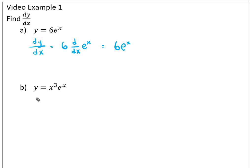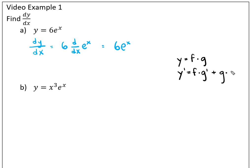For the second function, we acknowledge the fact that this is written as a product. Let's recall the product rule: if I have a function that is the result of two functions being multiplied, then the derivative is the first times the derivative of the second, plus the second times the derivative of the first.